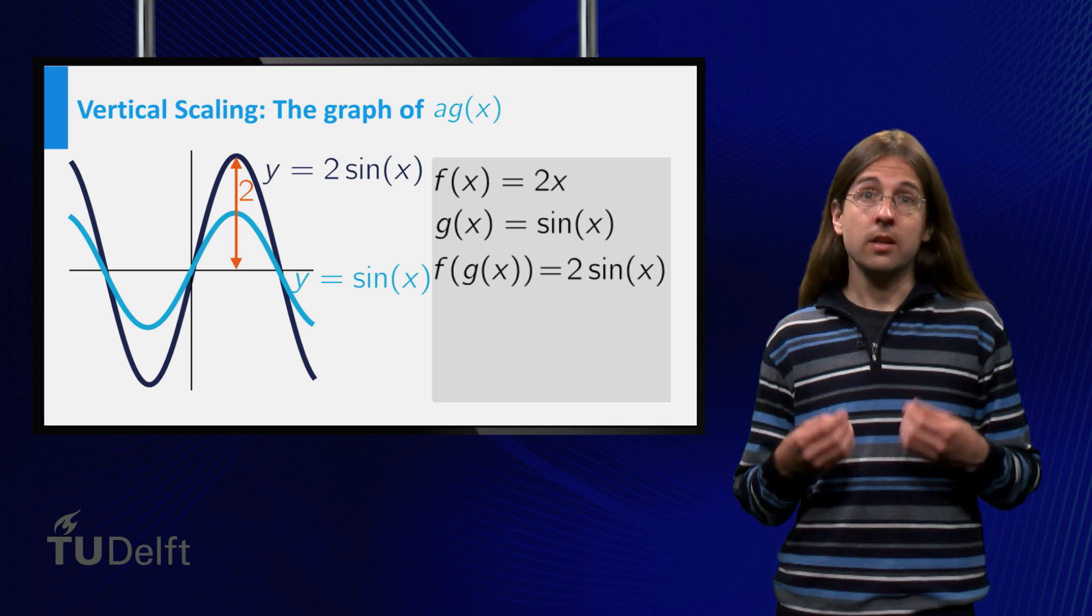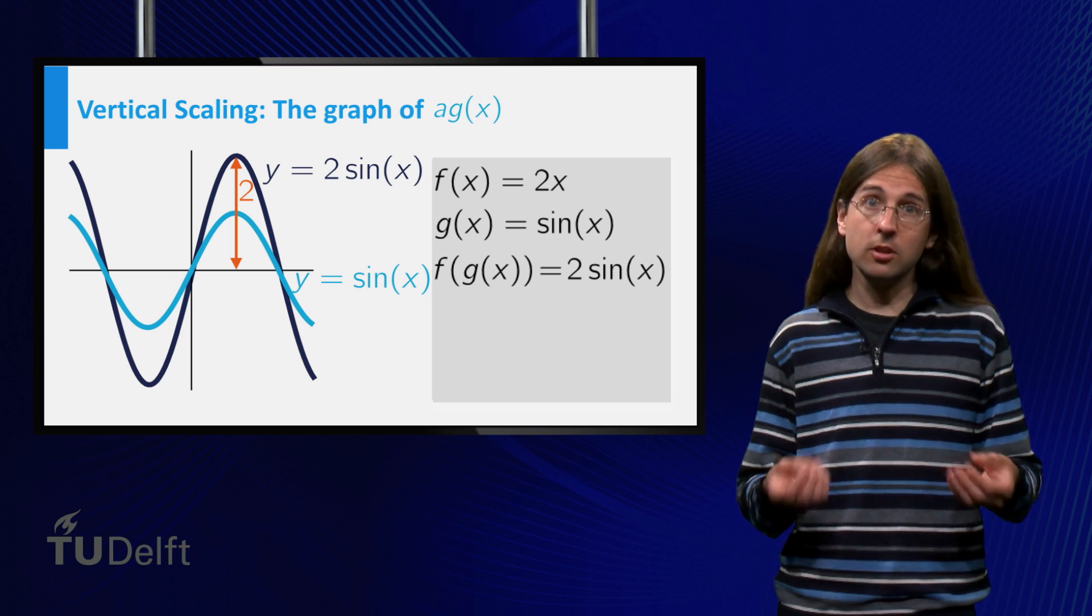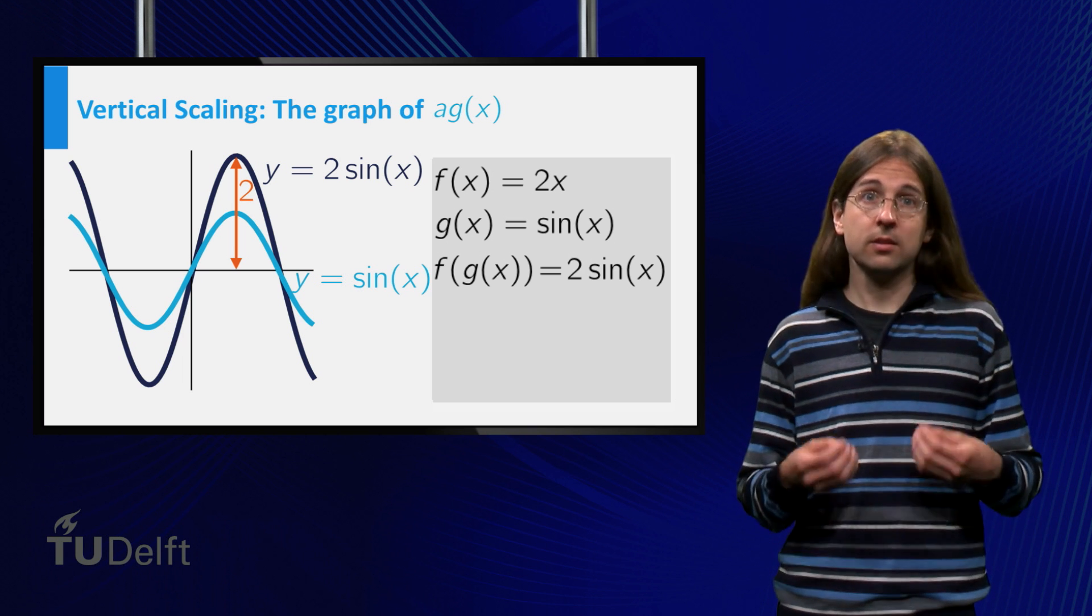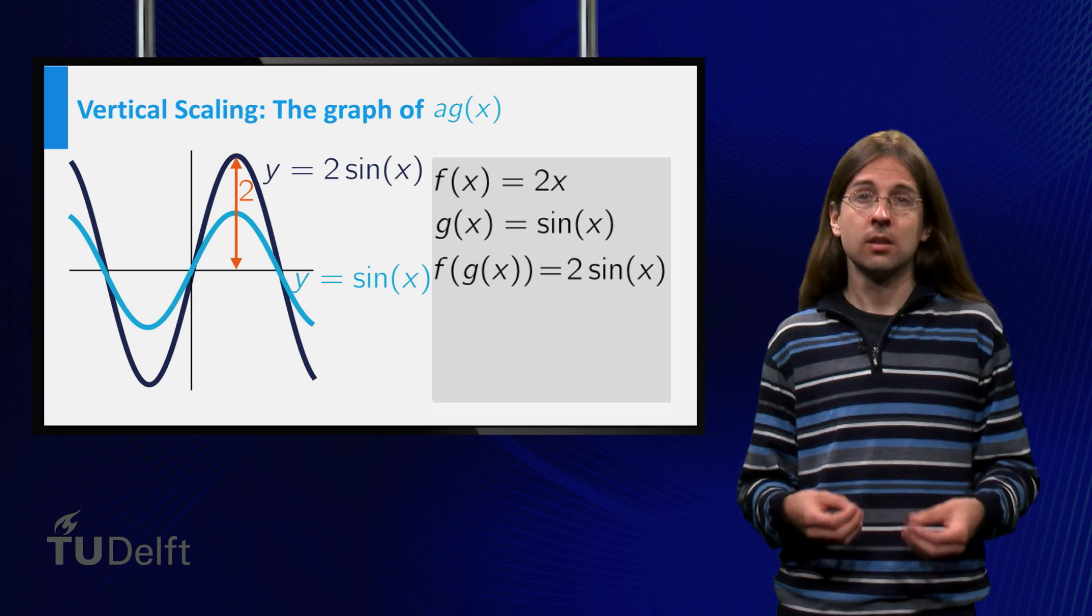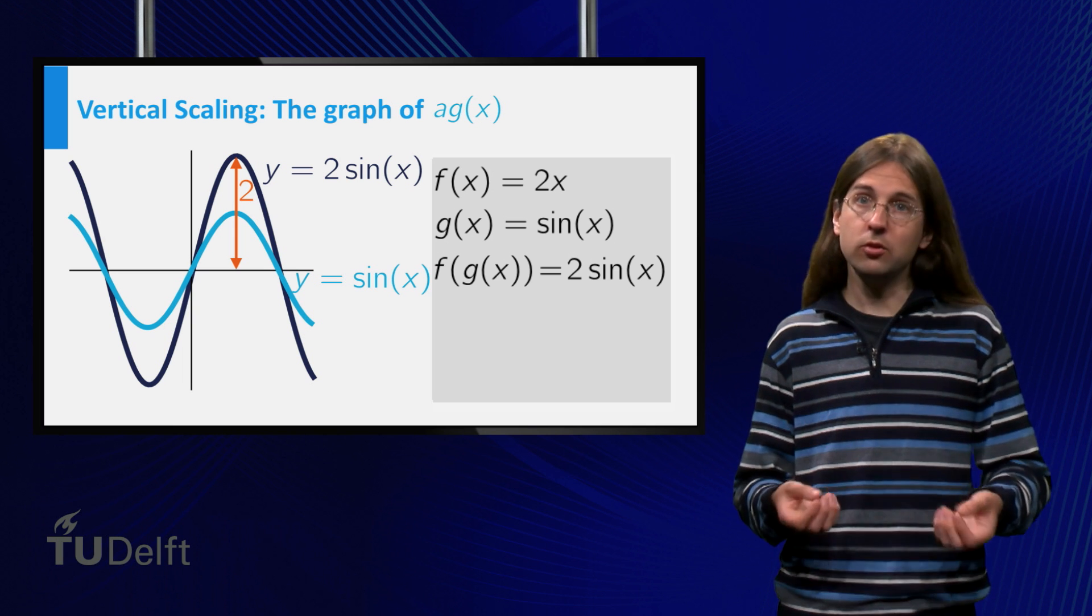Indeed, in general the value of f of g equals 2 times g is twice the value of g, thus the distance of the graph to the x-axis is multiplied by 2.